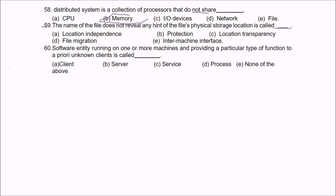Question 59: The name of the file does not reveal any hint of the file's physical storage location. This is called location transparency.